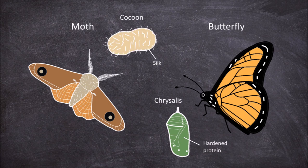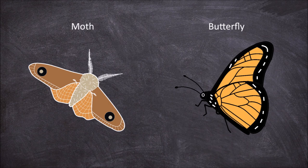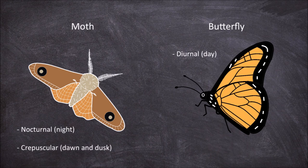The next difference is when they are active. The majority of butterflies are active during the day and are diurnal. The majority of moths are active at night and are nocturnal or crepuscular. It is important to note that there are some butterflies that are active during dusk and dawn, and some moths that are active during the day.